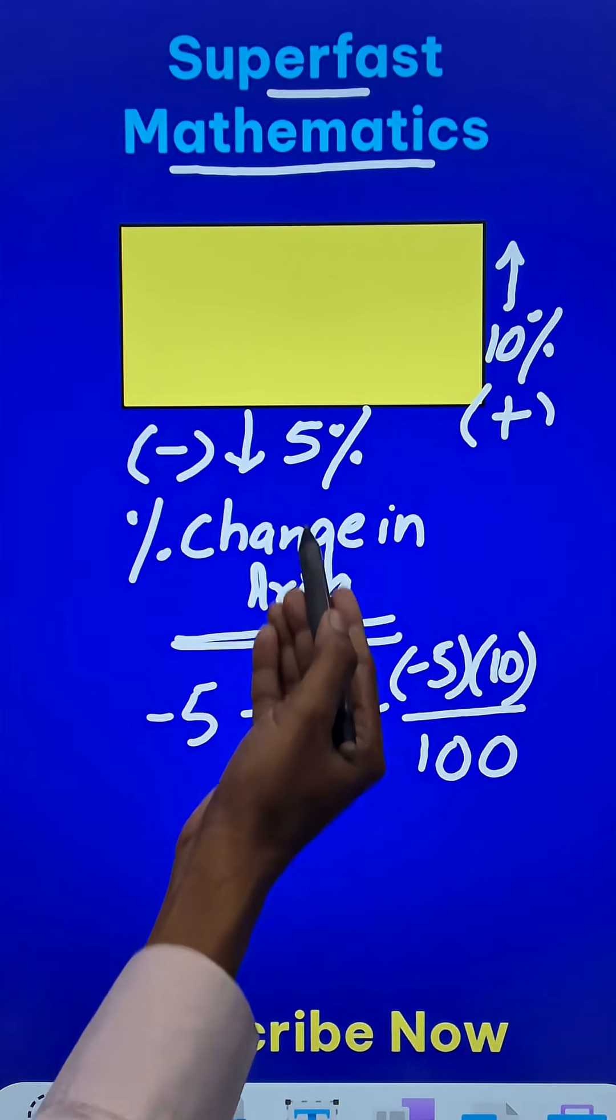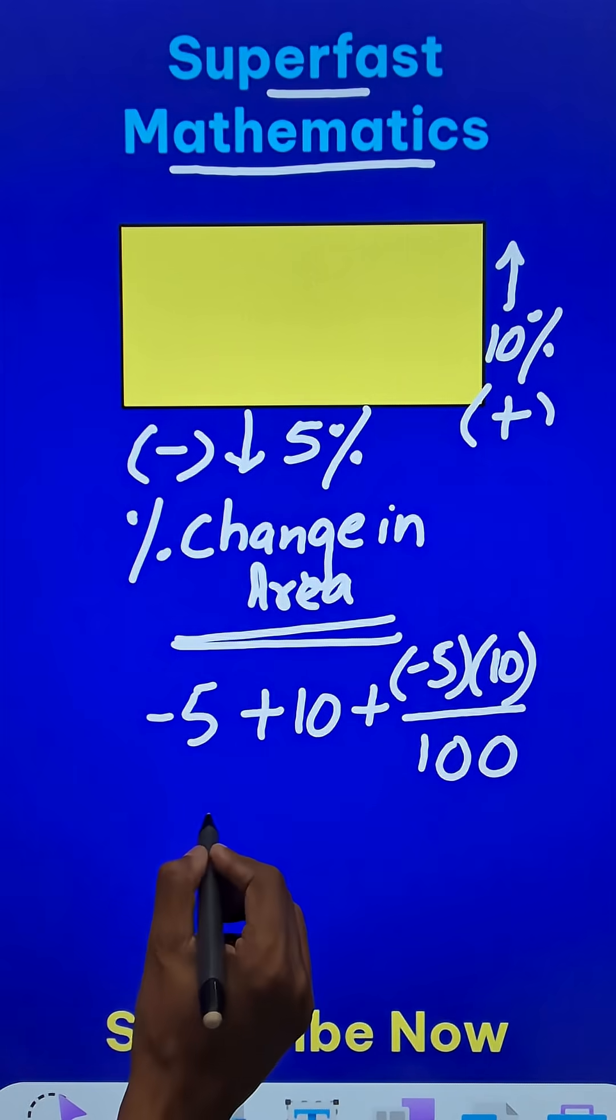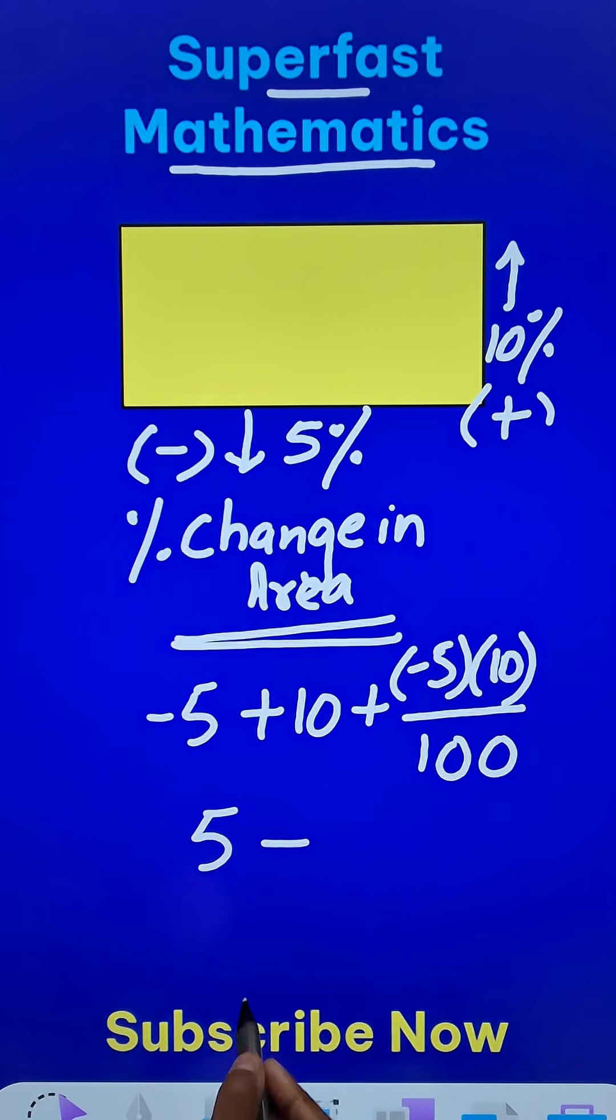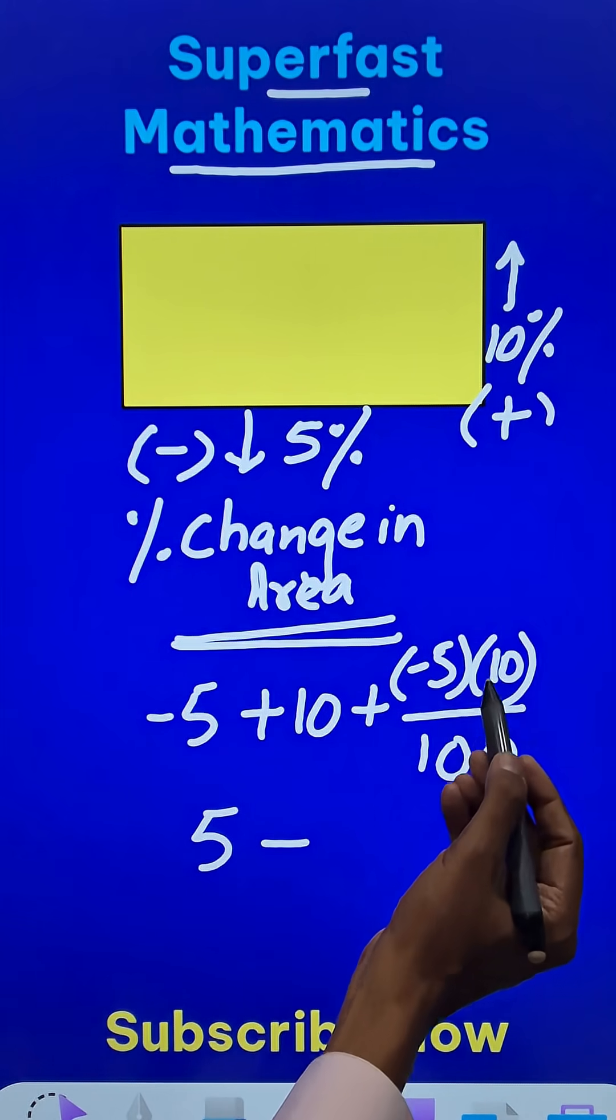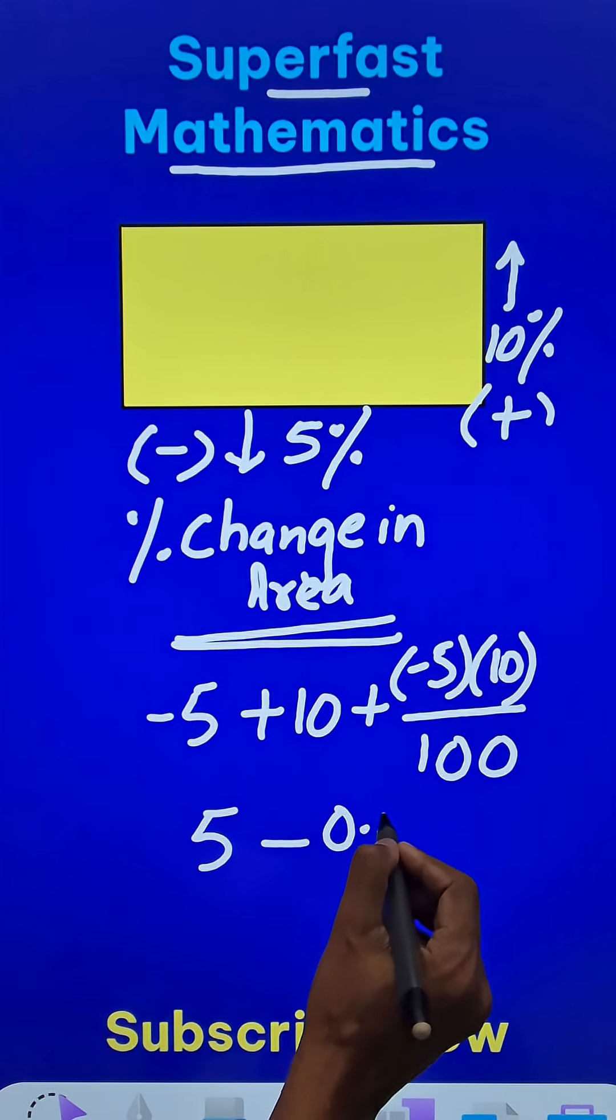So what does this become? Minus 5 plus 10 is 5. Plus minus is minus, and 5 times 10 is 50. 50 divided by 100 is half, that is 0.5.